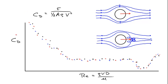Here's a graph of the coefficient of drag as a function of Reynolds number for fluid flowing over a sphere. We've got two different cases: one the upper case with a small Reynolds number, and the lower case with a large Reynolds number. These experimental results are independent of the diameter of the sphere, the viscosity of the fluid, etc.